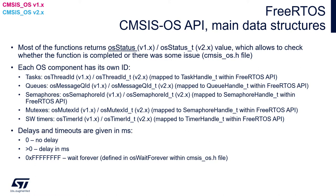Each OS component has its own ID and its own handler. In the case of tasks, it is osThreadId_t in version 2, and it is mapped to TaskHandle_t within the FreeRTOS API. Similar for queues, semaphores, mutexes, and software timers. It is important that those handlers are valid for components which need memory allocation — the control block and their own stack — which is why we need the handler to store all of that information.